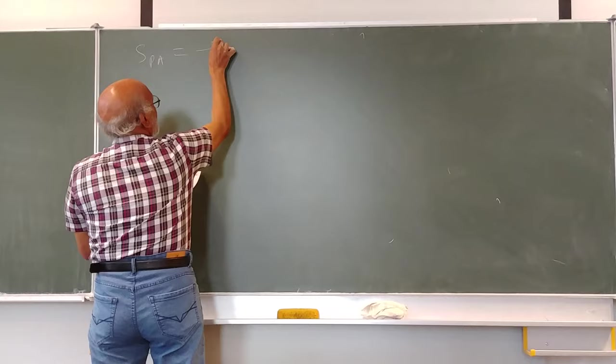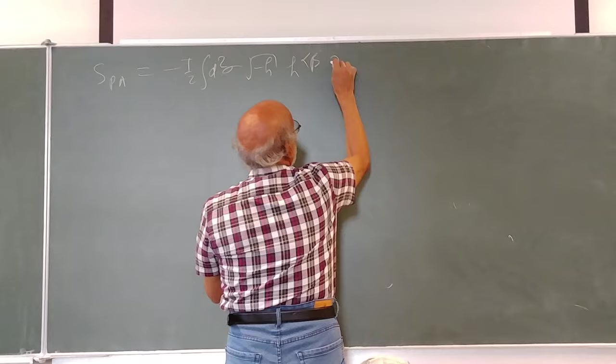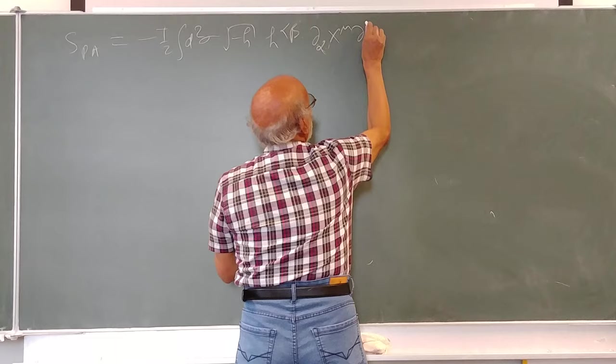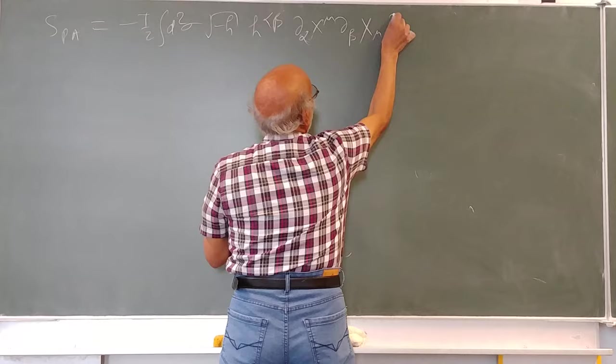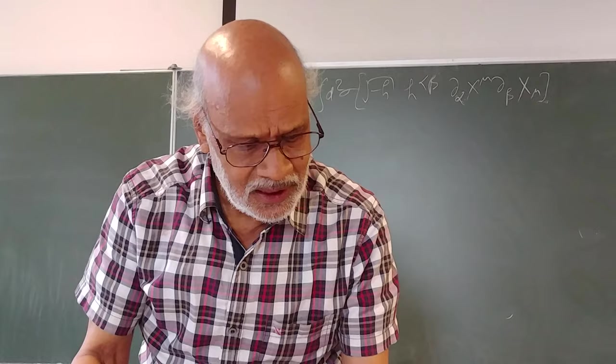This is minus e^σ times the square root of minus x times x_αβ.